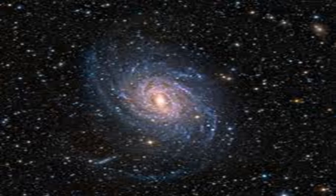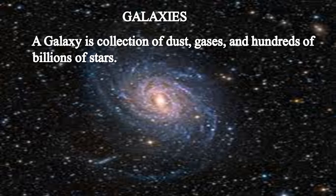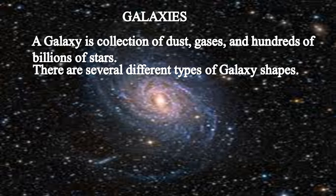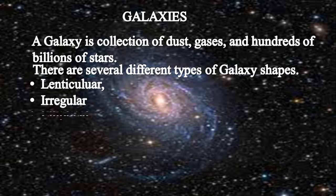So far, our astronomers have found more than 500 solar systems and are discovering new ones every year. Scientists estimate that there may be tens of billions of solar systems in our galaxy. The galaxy is a collection of dust, gases, and hundreds of billions of stars. There are several different types of galaxies categorized by their shapes: lenticular, irregular, elliptical, and spiral.